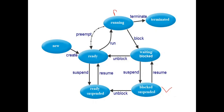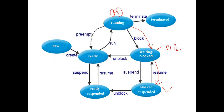Now let us see the next state — the blocked suspended state. Some processes are in the running state being executed by the CPU, and in between they want to use some resources. Those processes are moved to the waiting state. In the waiting state, if resources are not available, they keep waiting. If there are already many processes waiting for resources, instead of making them wait in main memory, those processes will be moved to wait in secondary memory — that is the blocked or suspended state.